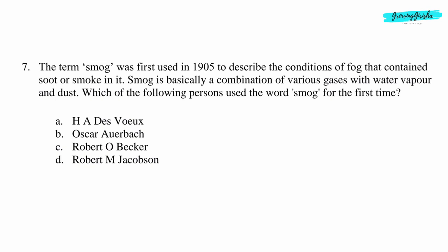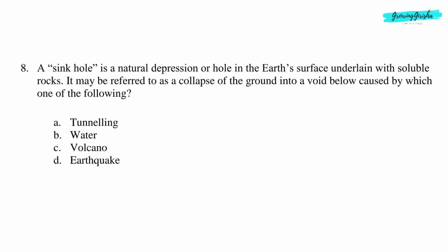Question 7: The term 'smog' was first used in 1905 to describe the conditions of fog that contained soot or smoke. Smog was basically a combination of various gases with water vapour and dust. Which of the following persons used the word smog for the first time? Option A: H.A. Devoe.